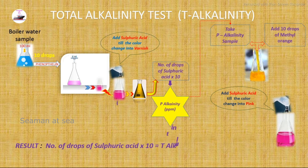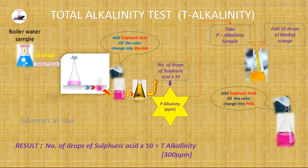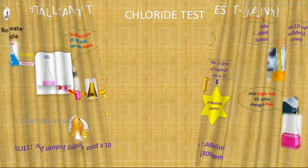The quantity of sulfuric acid added gives us the total alkalinity level in the boiler water. The number of drops of sulfuric acid multiplied by 10 gives the total alkalinity — 300 ppm is accepted by every surveyor. This test is used to find out the hydroxide, carbonate, and bicarbonate levels in the boiler water.